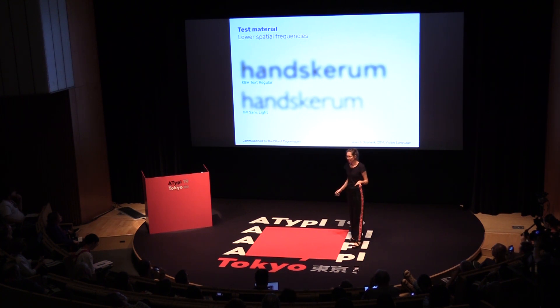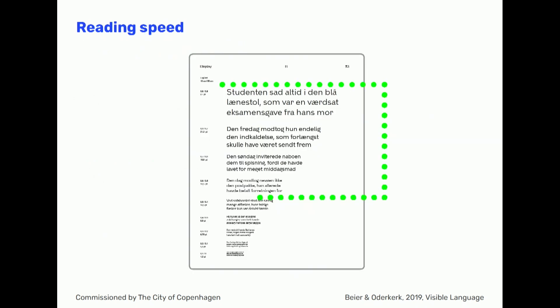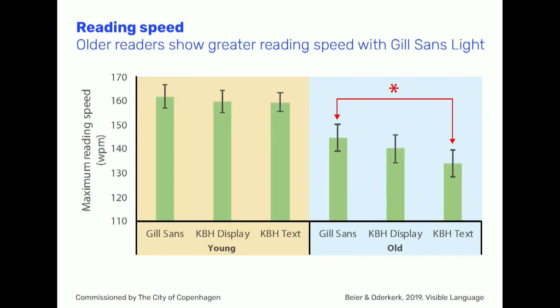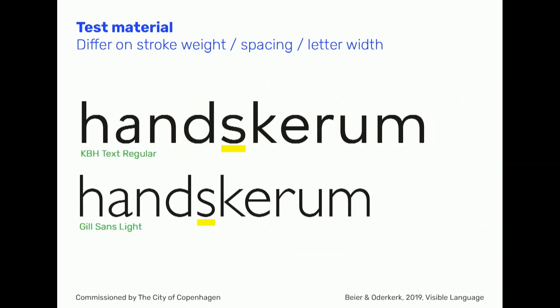If we think of the lower spatial frequencies where things blur out, both light weights and tighter spacing actually dissolve the letters more than wider spacing and heavier letters do. For the measure of reading speed — the average number of paragraphs you can read with relative ease — we found only a significant difference in the older group. Reading speed was faster with Gilsons compared to KbH text. One explanation may be that the letters are somewhat more narrow in Gilsons, so collectively they take up less space on the line of text.